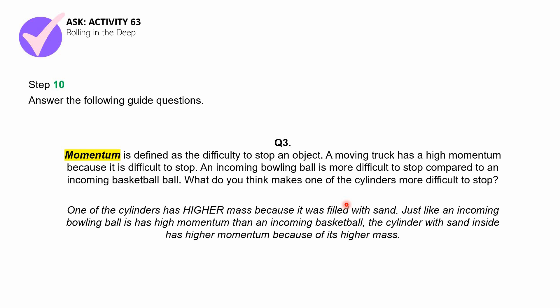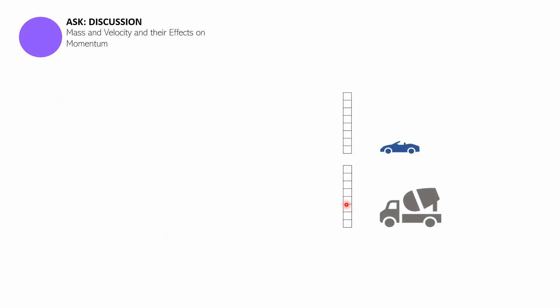That concludes the second part of this session, which is Activity 63, Rolling in the Deep. Let's now move to the last part of this discussion. Anyway, you have to make sure that you upload your photos, documentations, your data, your answers in your Edmodo account and tag it in your science class with me. Do not forget that. Now for the last part of this session, we have a discussion under the Ask section. We'll be discussing mass and velocity and their effects on momentum. By this time, at this point, you should be familiar with the relationship of momentum and mass. Momentum is the difficulty to stop an object, and we know that the higher the mass an object has, the more difficult it is to stop, and it also has higher momentum.